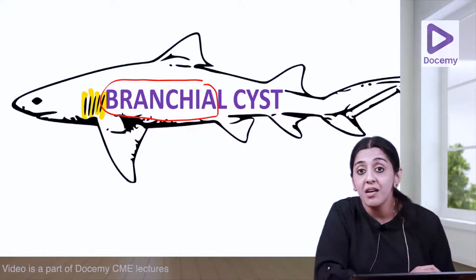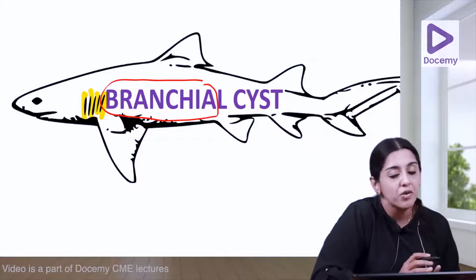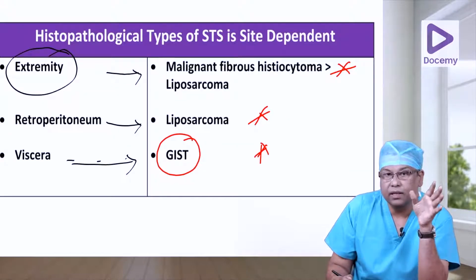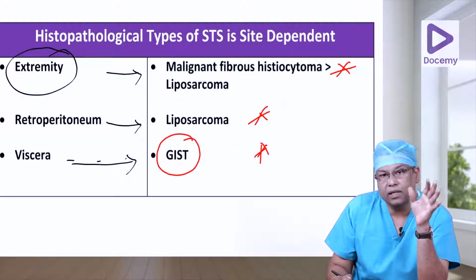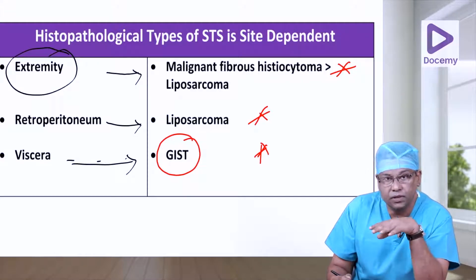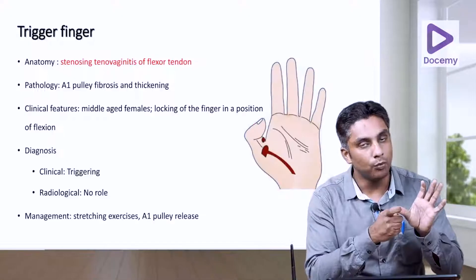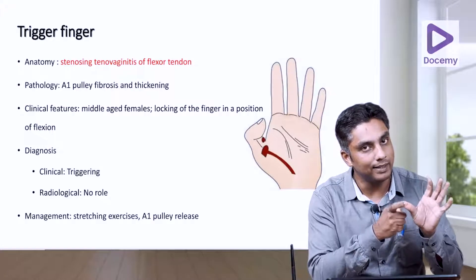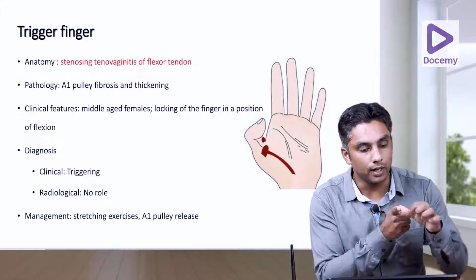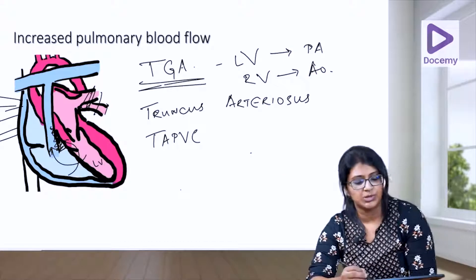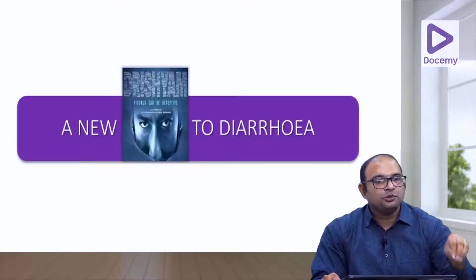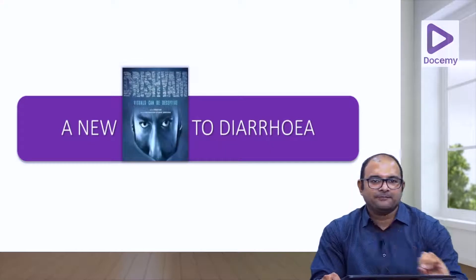So gills are a normal finding in fishes. It is not just studying and doing the under-graduation — it can also compound you with the benefit of adding on to your pre-PG preparations. But once an attempt is done to passively extend the digit, it will fire like a pistol. So as far as you guys are concerned, you need to know the TGA. Today's topic is a new approach to diarrhea.